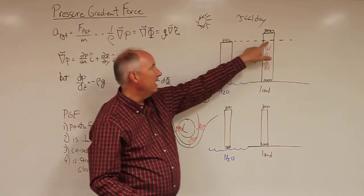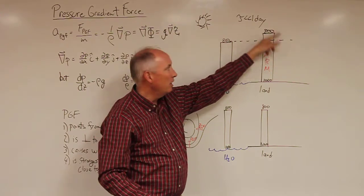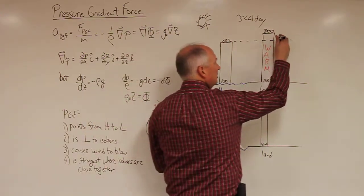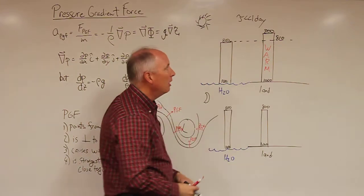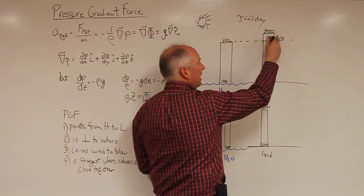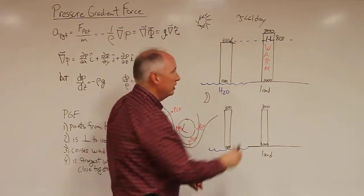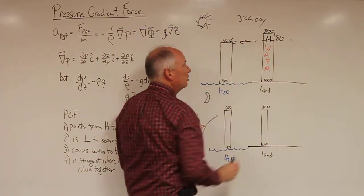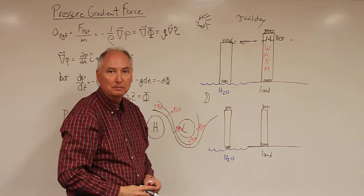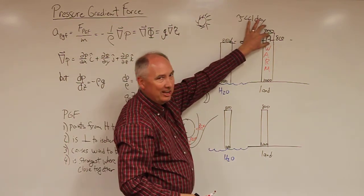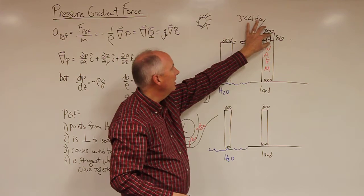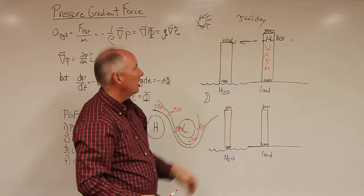And you have not changed the surface pressure because you have not added or removed mass from this column of air. All you have done is physically expanded the column and moved the pressure surfaces upward. So in this example, what used to be the 800 pressure surface is now greater than 800. So let's just say that it might be like 810 millibars. What we've done is we've created a high pressure in this location and a low pressure at that location. And the air will start to move from high to low pressure.